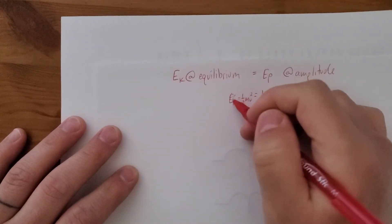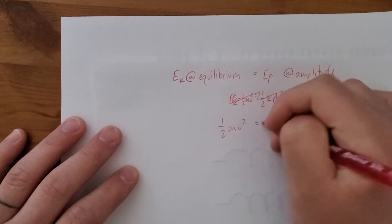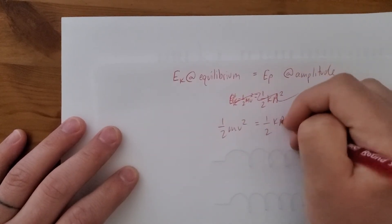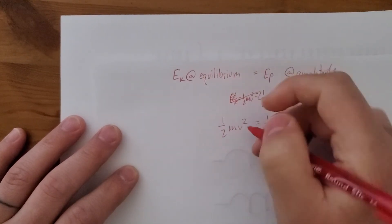Let me just write it out again. I'm going to say half mv squared equals one-half kA squared. This v is the speed at the equilibrium position. It's the maximum speed.